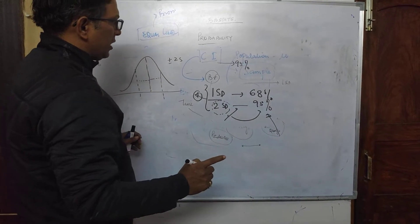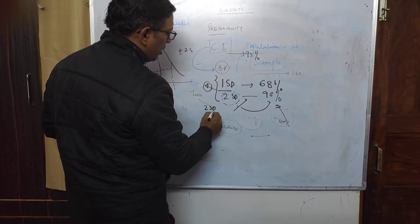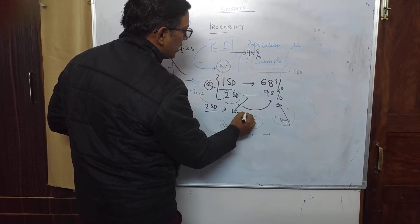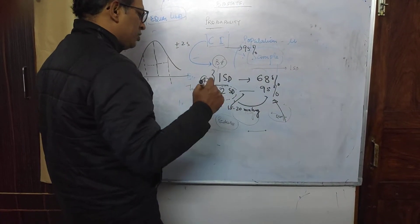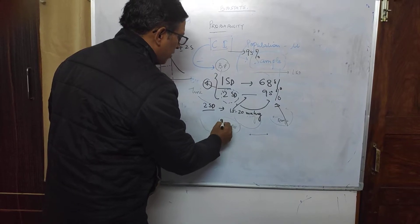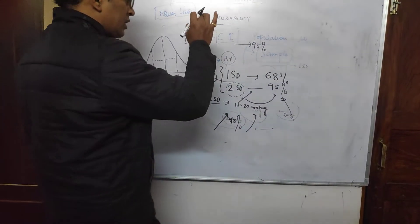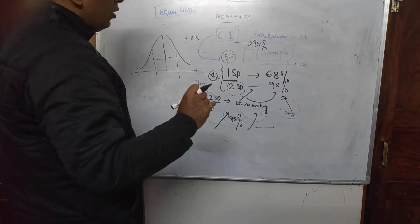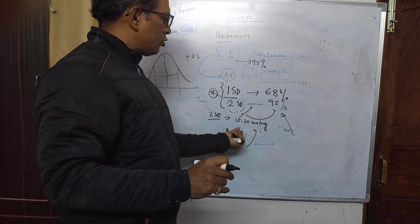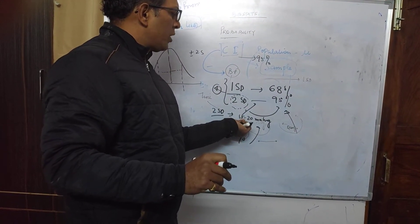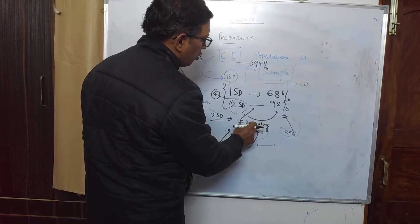With two standard deviations, there is a 95% probability. The confidence interval tells us nothing else but where the true value lies — where the true mean lies. So there is a 95% chance that my drug is going to lower blood pressure, and this is where my true value is going to lie.